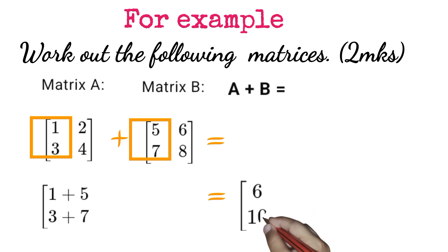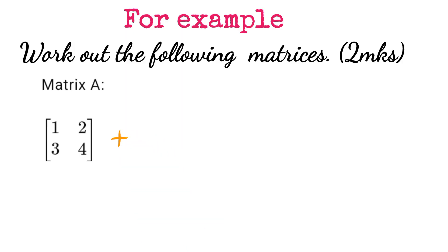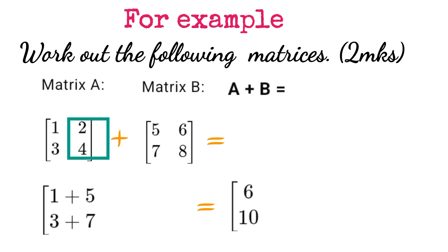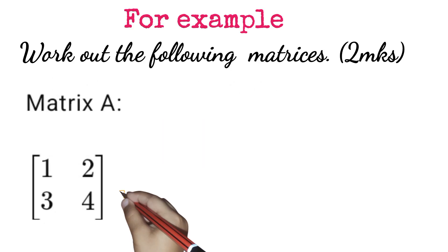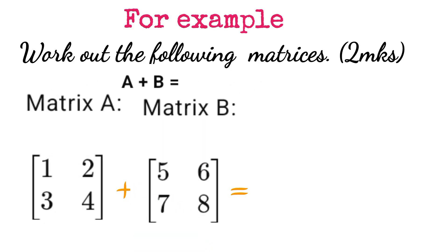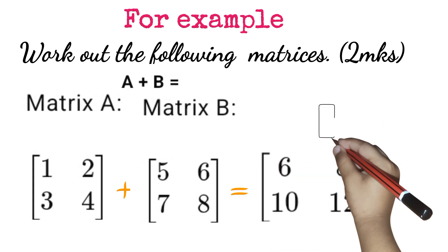Then we go to the second columns: 2 and 4 to be added to 6 and 8 respectively. That is, 2 plus 6 is 8, and 4 plus 8 is 12. So it is that simple. You see? Wow! Give me a like. If you are watching us for the first time, kindly subscribe to our channel.